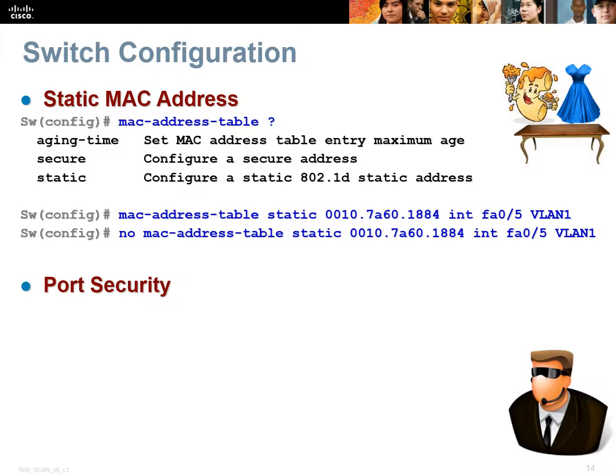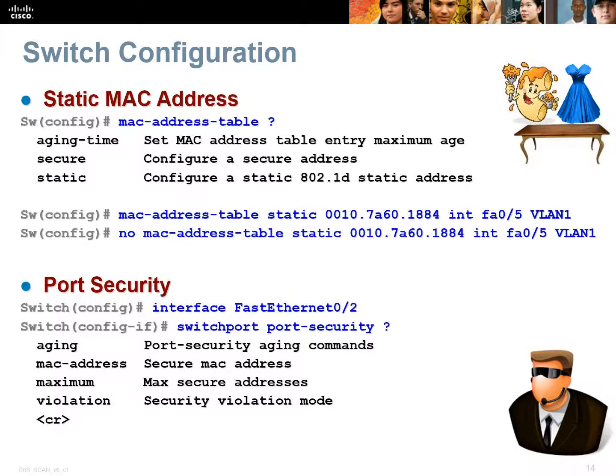Port security is a very big factor in this module. Go into interface mode and type switchport port-security — there are five options, with carriage return being the final one. One of the biggest things people forget with port security is you have to turn it on. You can set up aging, violation, maximum MAC addresses, and which MAC addresses to learn. But unless you turn it on with switchport port-security and hit enter, it's not going to do anything. Then you set up your maximum, aging, and violation control.